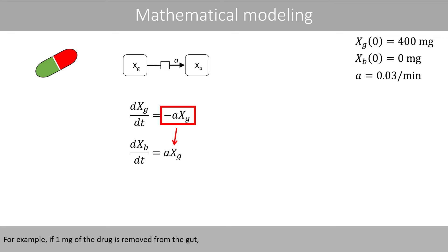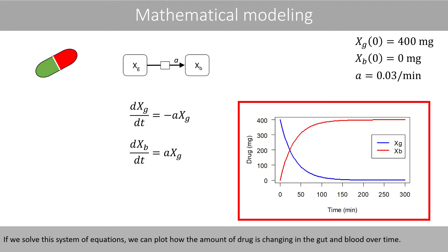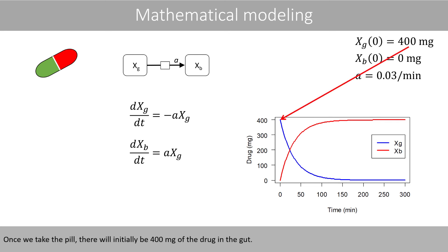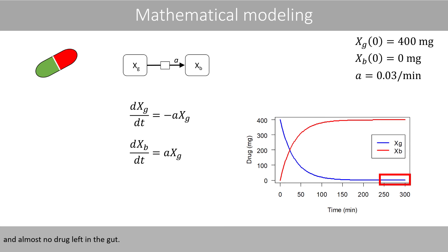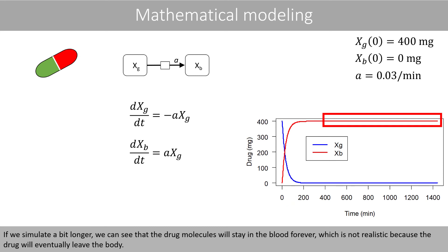For example, if one milligram of the drug is removed from the gut, that same amount enters the bloodstream. If we solve this system of equations, we can plot how the amount of drug changes in the gut and blood over time. Once we take the pill, there will initially be 400 milligrams in the gut. After a few hours, all drug molecules have been absorbed into the blood, resulting in 400 milligrams in the blood and almost no drug left in the gut. If we simulate a bit longer, we see the drug molecules stay in the blood indefinitely, which is not realistic, because the drug will eventually leave the body.